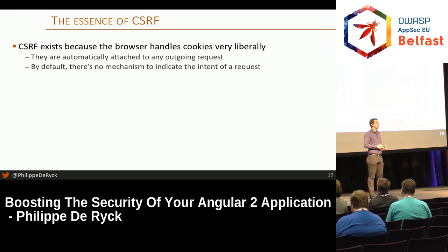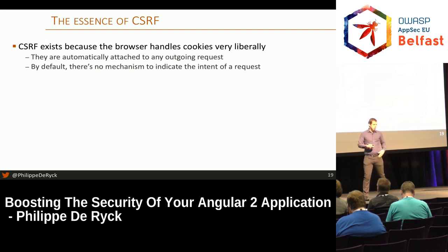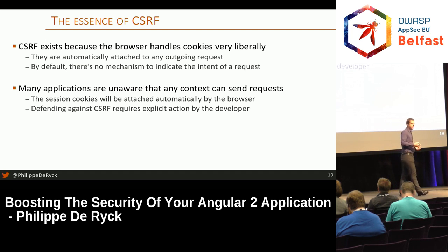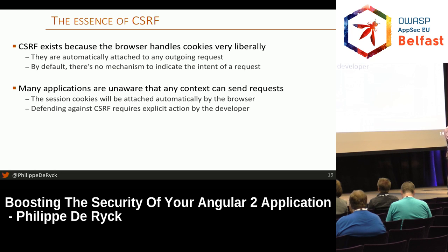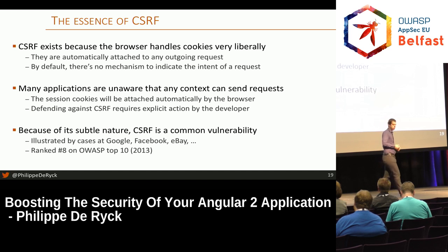Essentially, the reason for CSRF is the liberal handling of cookies in the browser — the browser simply attaches cookies to any request. By default, there's no way to indicate whether something is intentional or not. The backend needs to be really aware of CSRF before you can take action. If you don't know about CSRF, you will not have implemented a defense, and you will probably be vulnerable. Major companies — Google, Facebook, eBay — they all suffered from CSRF at one point or another.